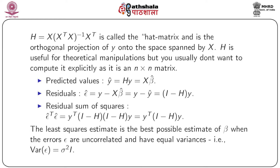The least square estimate is the best possible estimate of β when the errors ε are uncorrelated and have equal variance — that is, Var(ε) = σ²I. This is consistent with the assumptions of fitting a proper linear model discussed in previous modules: the errors should be free of autocorrelation and should be homoscedastic. In other modules we have seen how to detect deviations from these assumptions and how to remedy violations of autocorrelation and heteroscedasticity.